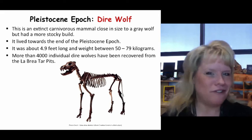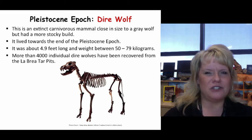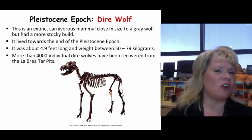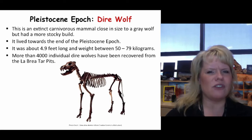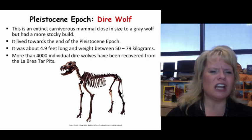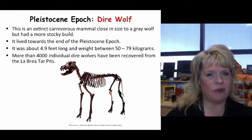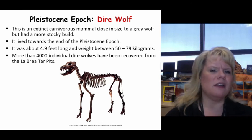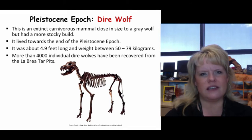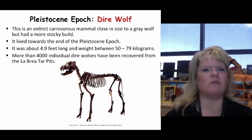You can't talk about the Pleistocene without the dire wolf — an extinct carnivorous mammal very close in size to a modern gray wolf, but with a much more stocky build and a much stronger bite. They got up to 79 kilograms at their biggest, with an average somewhere around 60 to 65 kilograms, and were almost 5 feet long. What makes them so famous is the sheer number in the fossil record — over 4,000 have been found in the La Brea tar pits alone. Dire wolves were very common throughout North America.